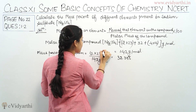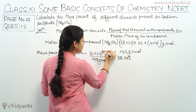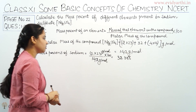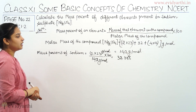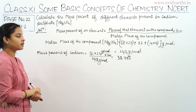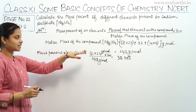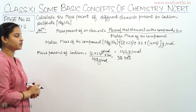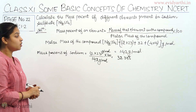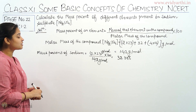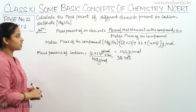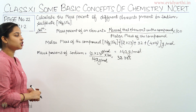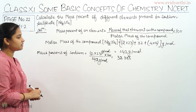So 2×23 divided by 142 grams per mole — the grams per mole units cancel — multiplied by 100 equals 32.39%. So the mass percentage of sodium in sodium sulphate is 32.39%.